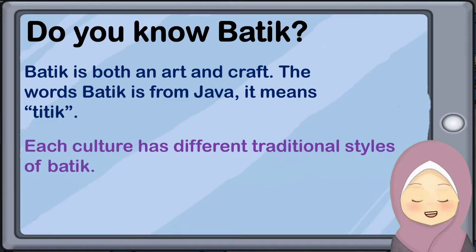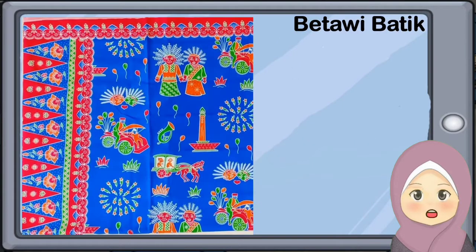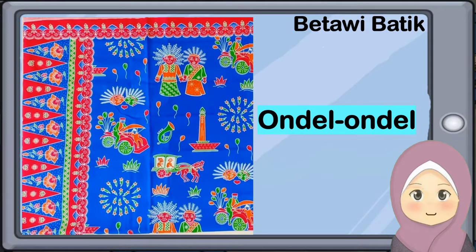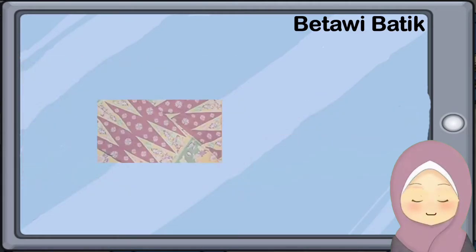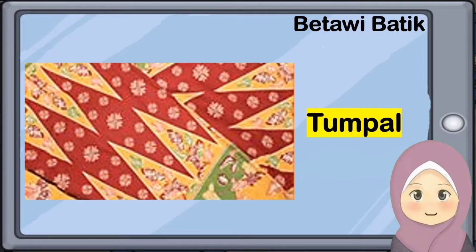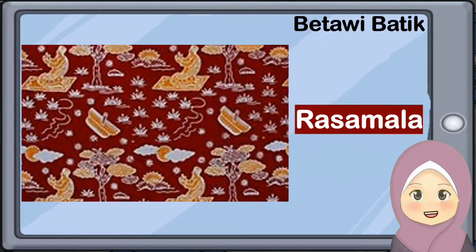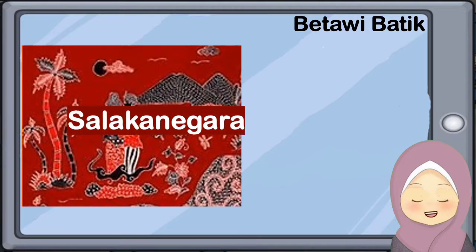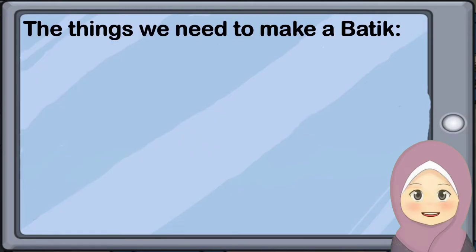Each region has different traditional styles of batik. Betawi batik has many patterns, such as the ondel-ondel pattern, the nusa tumpal kelapa pattern, the tumpal pattern, the pasamala pattern, the salakanegara pattern, and many more. When we want to make batik, we need certain things.